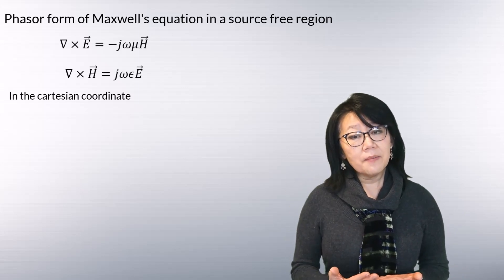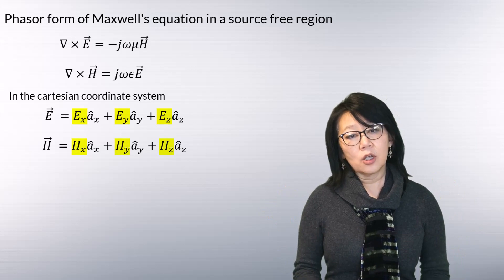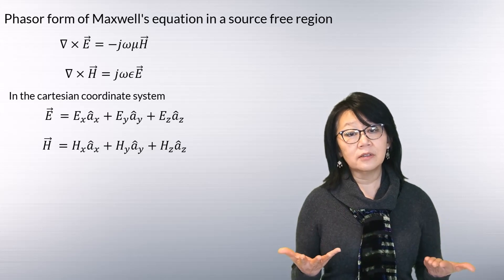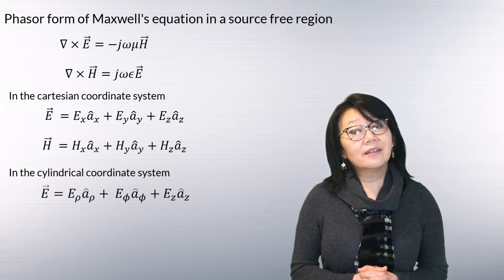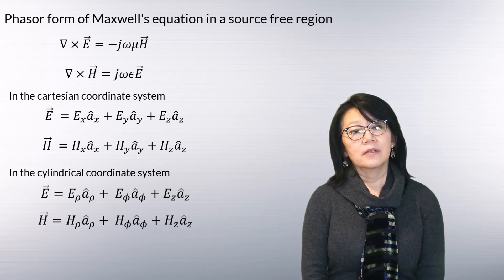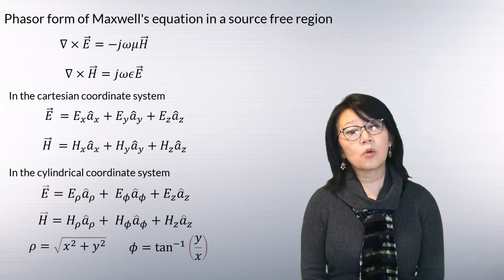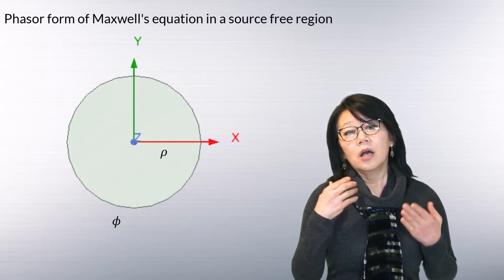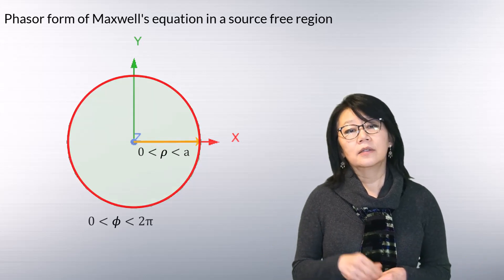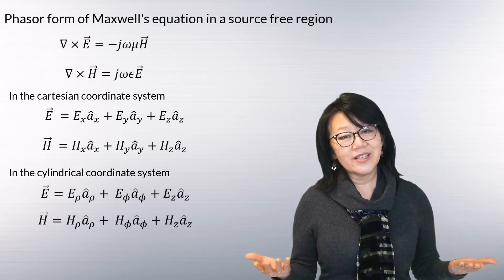The electric and magnetic fields have components along the X, Y, and Z axes in the Cartesian coordinate system. Since the waveguide geometry is identical to a long cylinder, we represent both the electric and magnetic fields in terms of cylindrical coordinates, where rho and phi are related to X and Y in the Cartesian system. Rho ranges from 0 to 'a' while phi ranges from 0 to 2π.